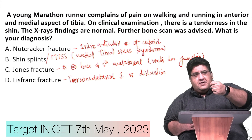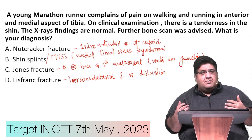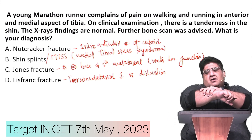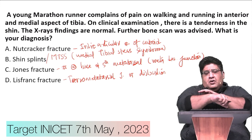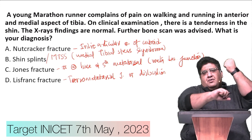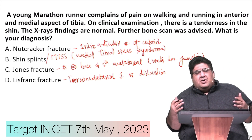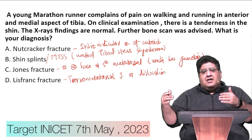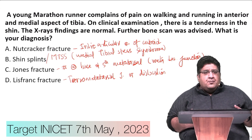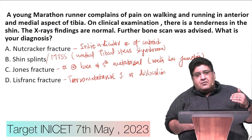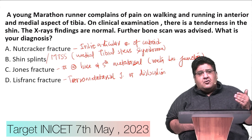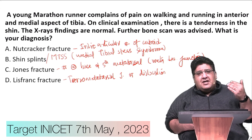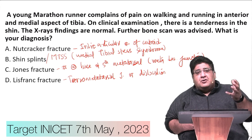A common problem in marathon runners is continuous stress on the anteromedial border of the tibia - that is what we call the shin. The anteromedial border of the tibia is quite subcutaneous. We have skin, then fascia, then muscles, then bone. Because it is very subcutaneous, trauma happening onto that area is transmitted directly onto the shin - there is no soft tissue to absorb that trauma.